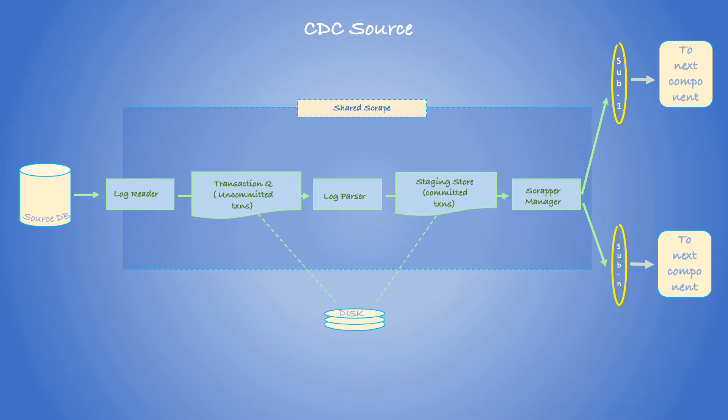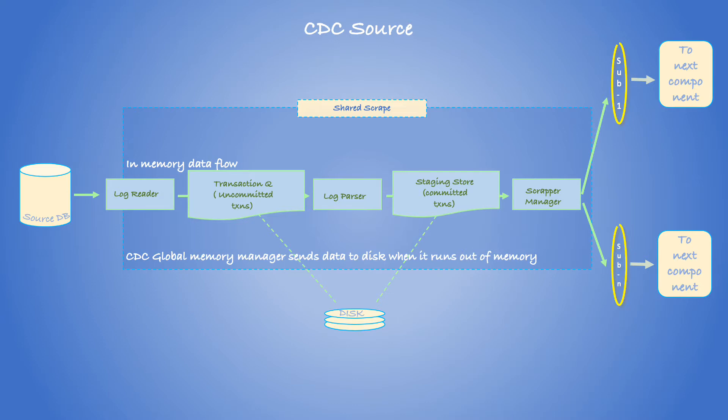This diagram shows the different components of a shared script. Most operations happen, or should ideally happen, in memory. But when there isn't enough memory, transaction and staging store components will save data on the disk. Note that the transaction queue component holds uncommitted transactions, while staging store holds parsed and committed transactions.